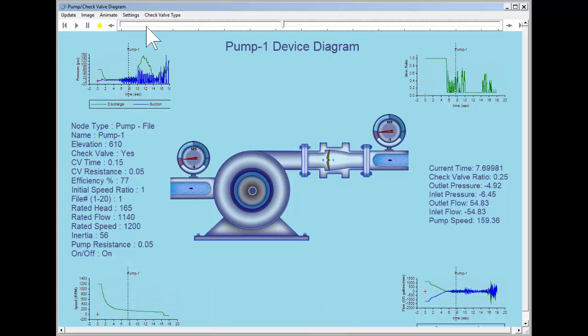Last, we can change the check valve type. Currently, we are showing a wafer type check valve. Let's change this to an axial check valve.